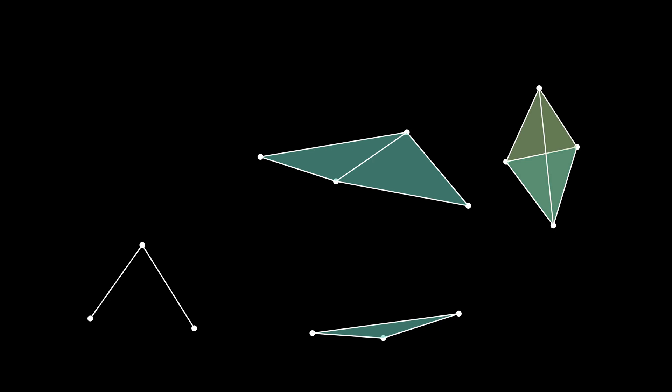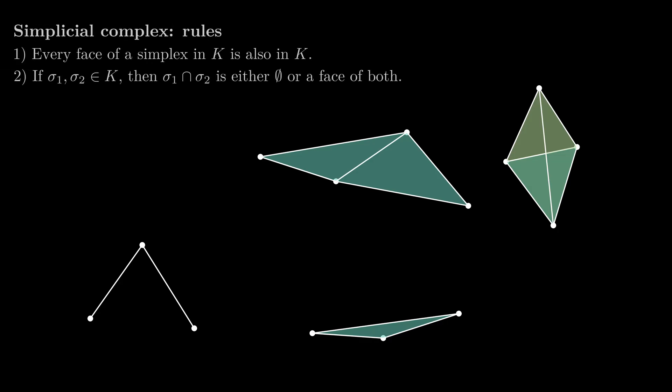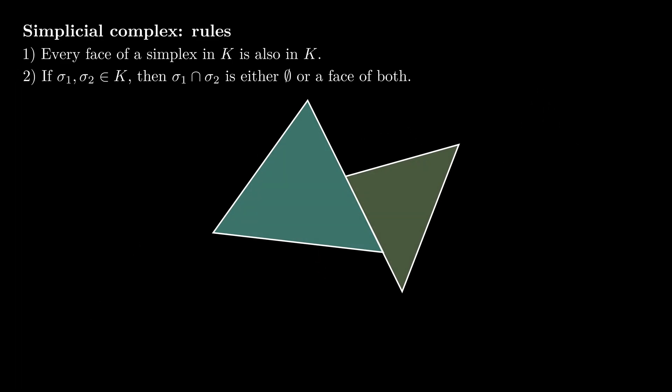By combining these building blocks, we create a simplicial complex. But not just any collection of simplices will do. There are two rules. Every face of a simplex must also be in the complex. If two simplices intersect, their intersection has to be a face of both. So, for instance, this is not a simplicial complex, because their intersection is not a face of both.